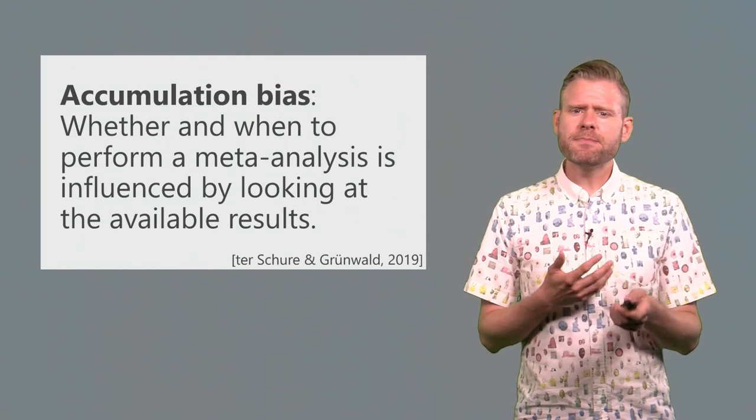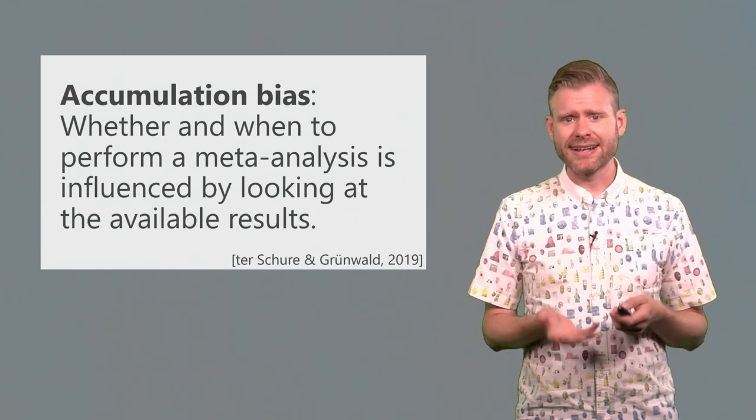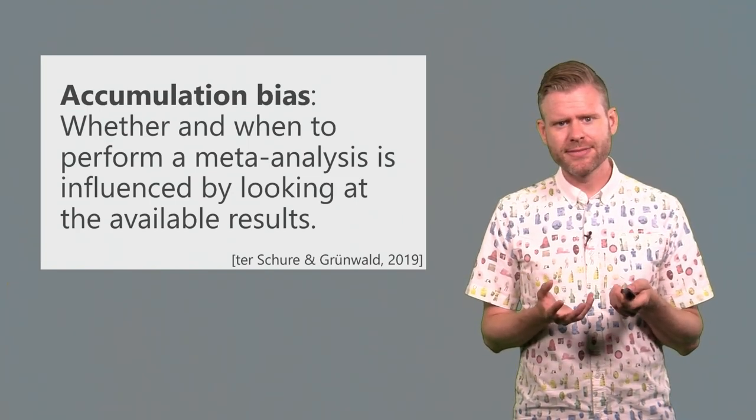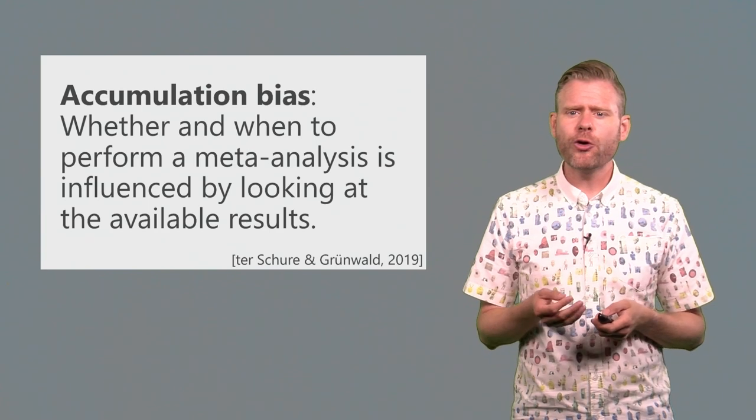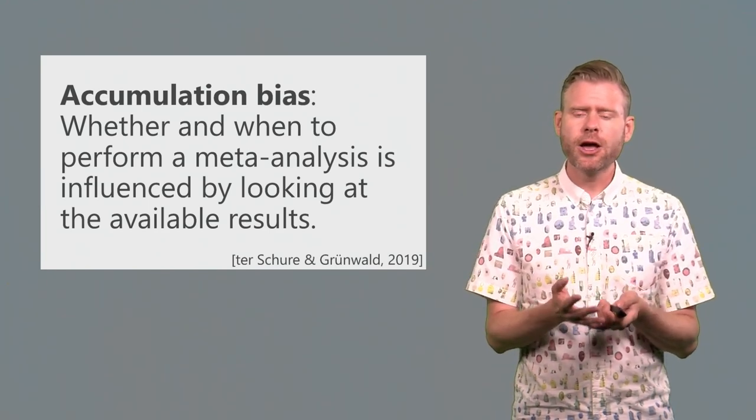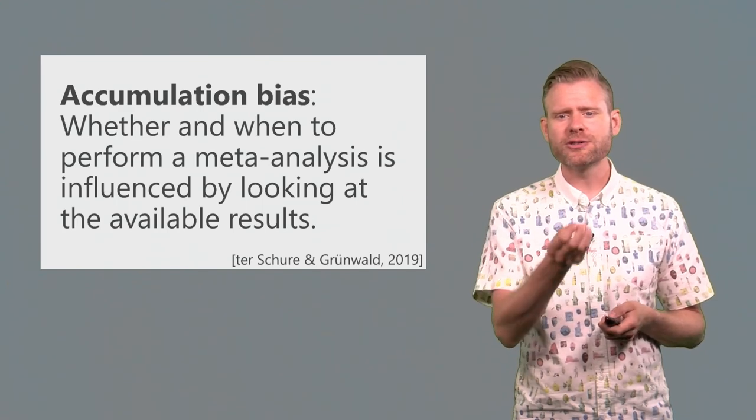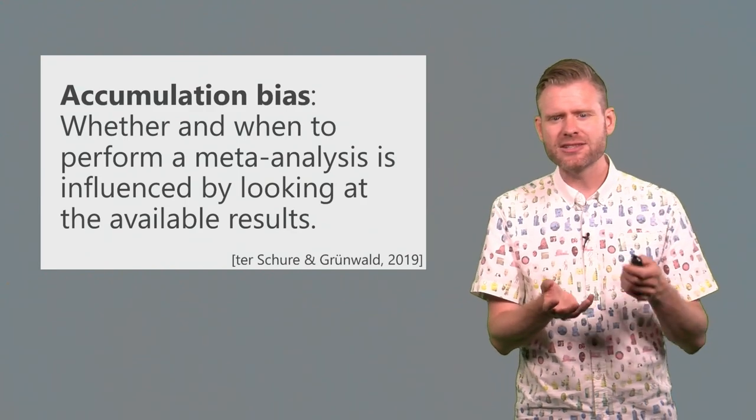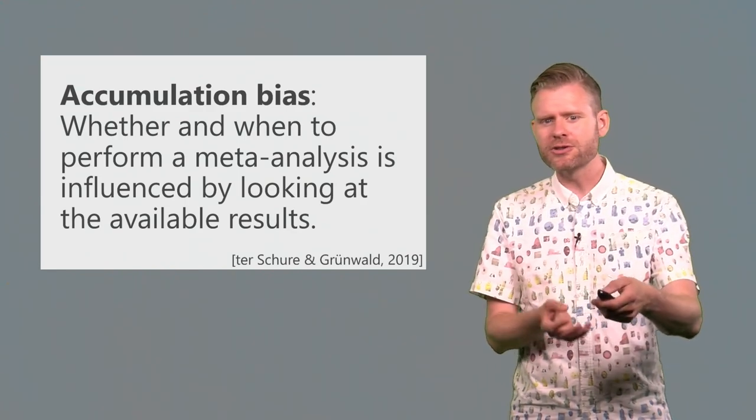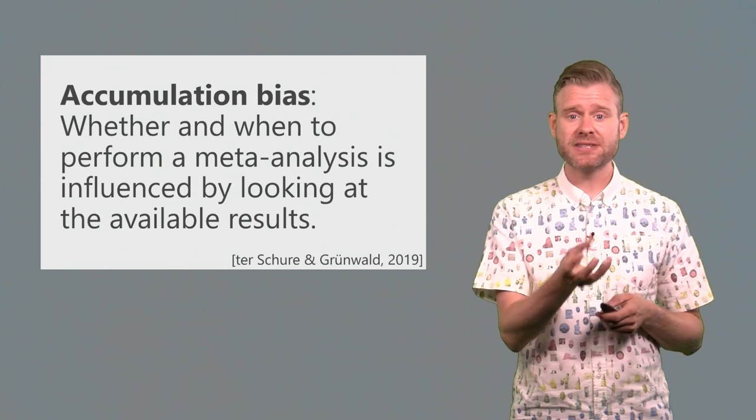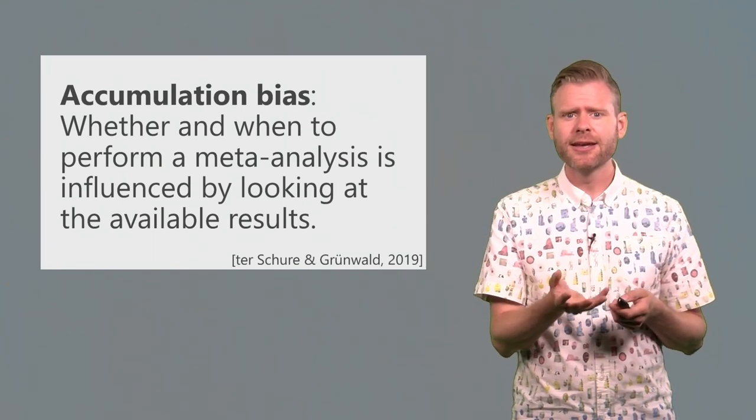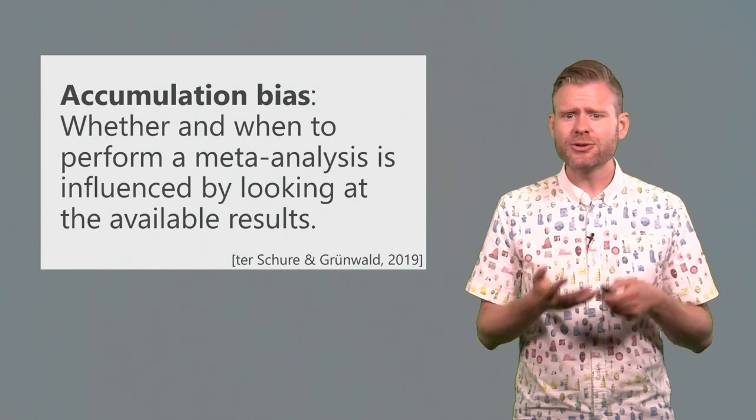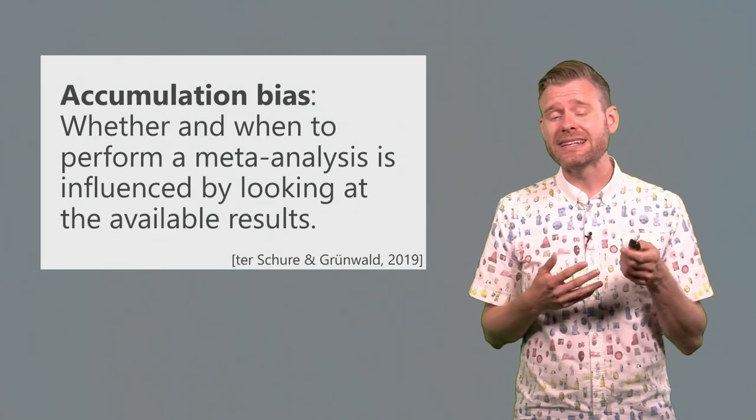Finally, there might be some bias in the moment that we choose to perform a meta-analysis. This might especially be true for internal meta-analyses. If, like I mentioned before, you decide to do an internal meta-analysis, but you only do this after the first non-significant study that you observe, so you try to use a meta-analysis as a trick to make non-significant results look much better, then this in itself is actually introducing bias. Because whether and when to perform a meta-analysis is influenced by looking at the available results. So this is also a source of bias you need to keep in mind.